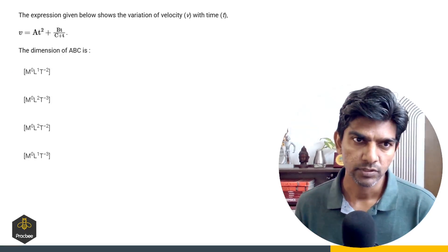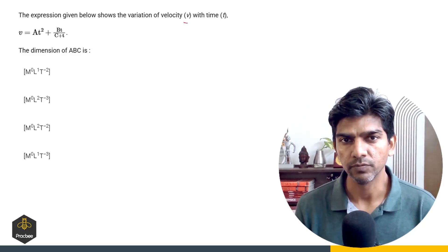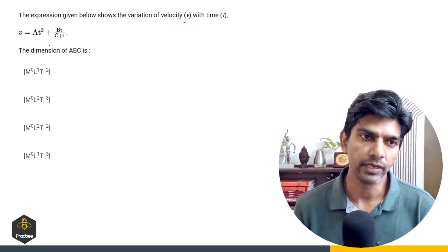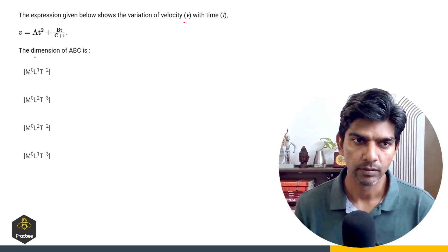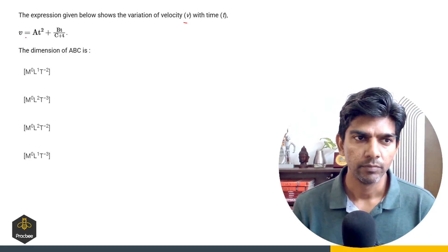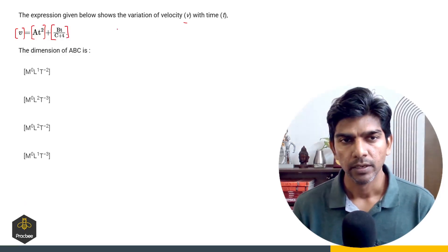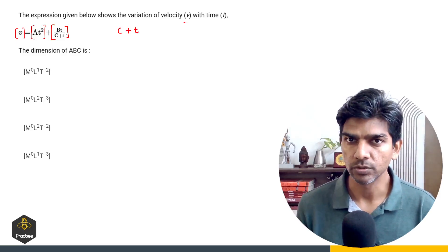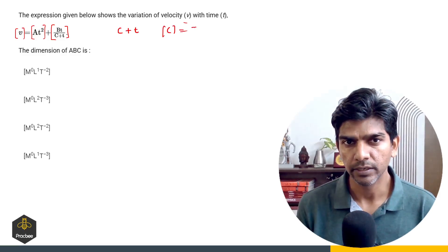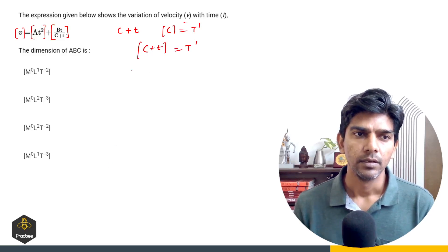Now let us see this question based on the principle of homogeneity of dimension. The expression shows the variation of velocity v with time t. We have to find the dimensions of A, B, C and then their product A·B·C. By the principle of homogeneity, the dimension of v is same as dimension of A·T squared, same as B·T upon (C plus T). Since C is added to T, the dimension of C is same as the dimension of time: T raised to power 1.